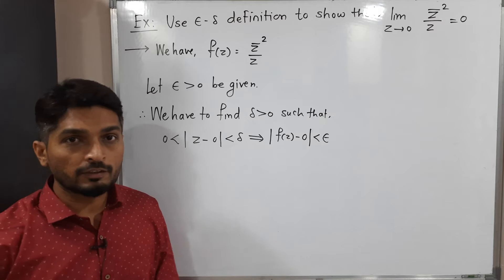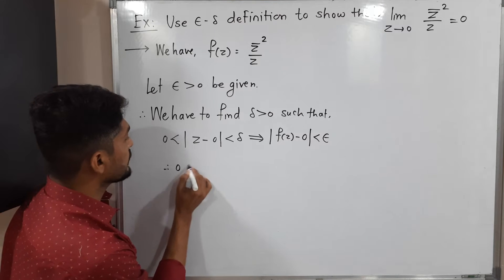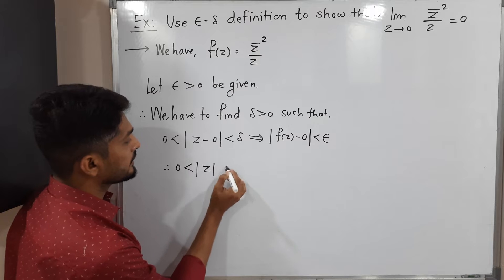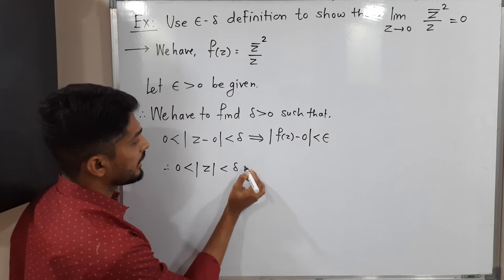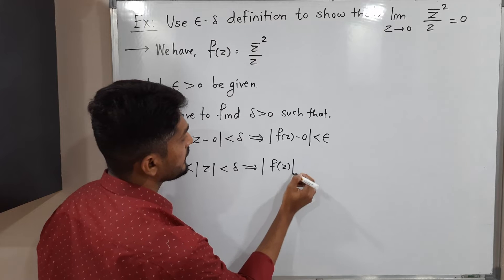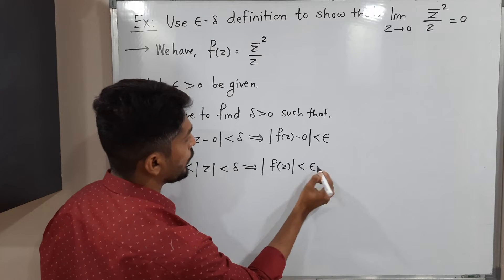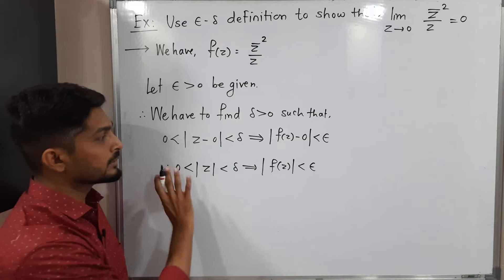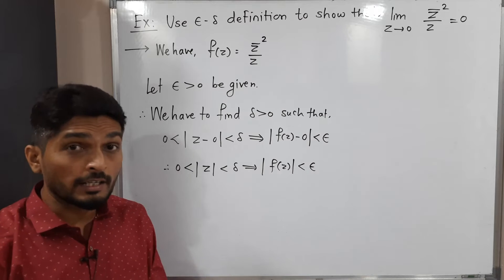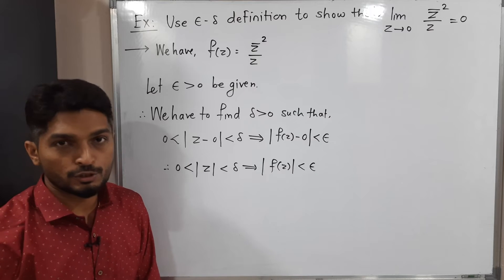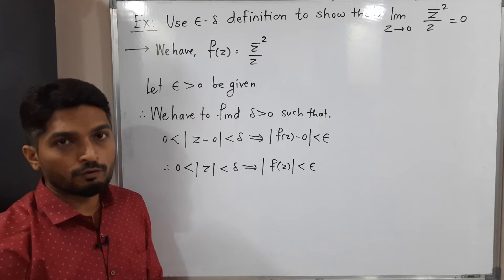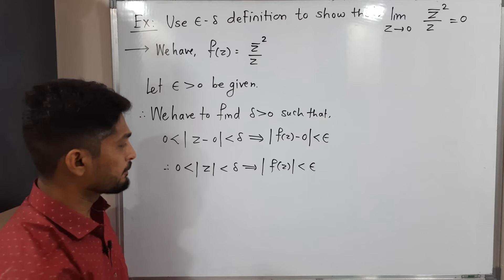Let us simplify it further. We need 0 less than |z| less than delta and |f(z)| less than epsilon. So we have to prove this condition holds — that means we have to find delta which will satisfy this condition. Let us find the value of |f(z)| first, and then we will find delta.